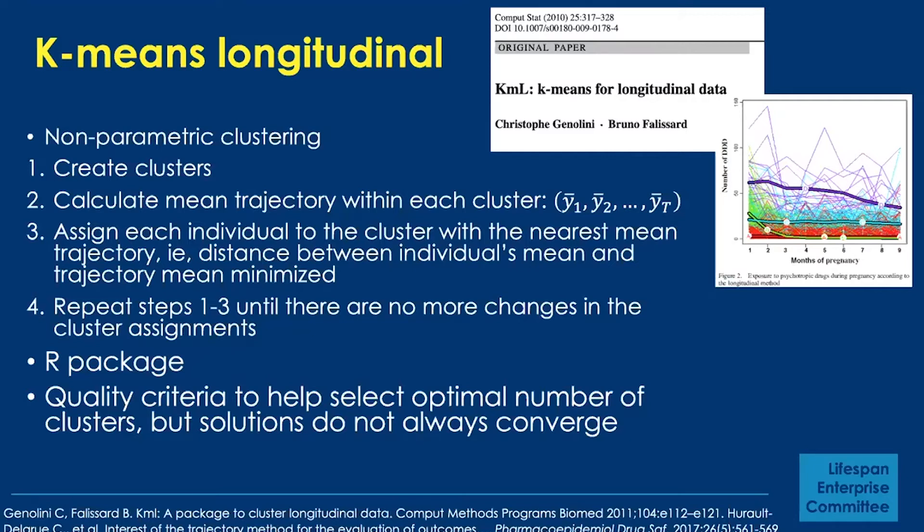There are quality criteria that can help select the optimal number of clusters, but one drawback is that the solutions do not always converge. In fact, when I've used this approach, they usually don't converge, so we'll talk about that later as a limitation.